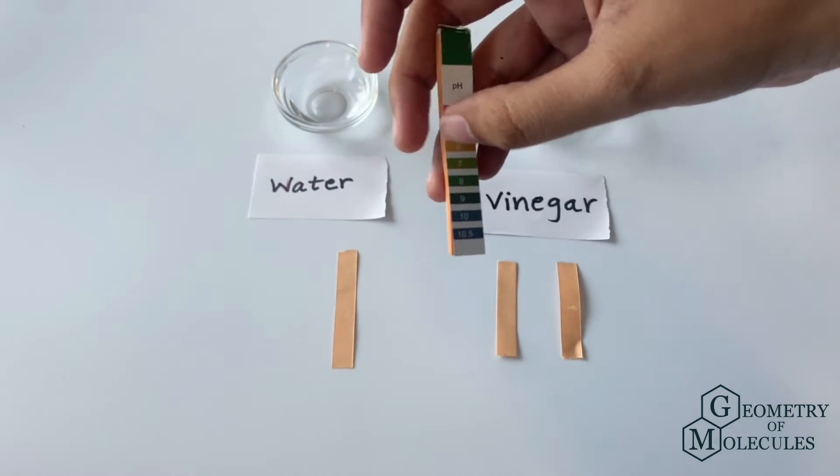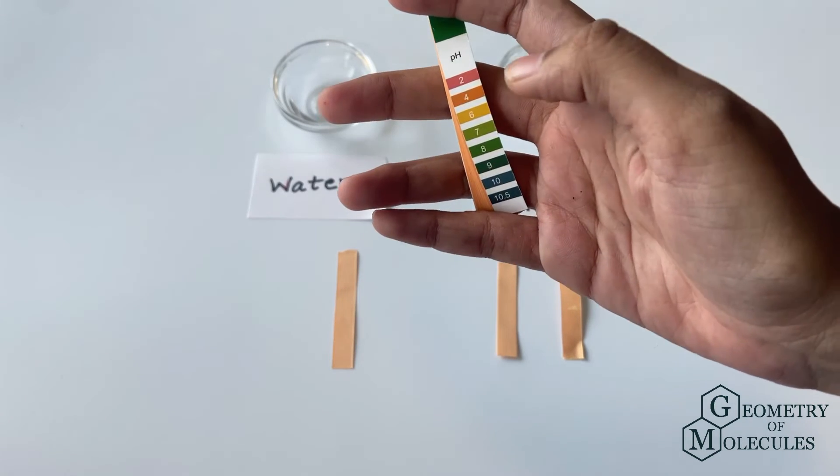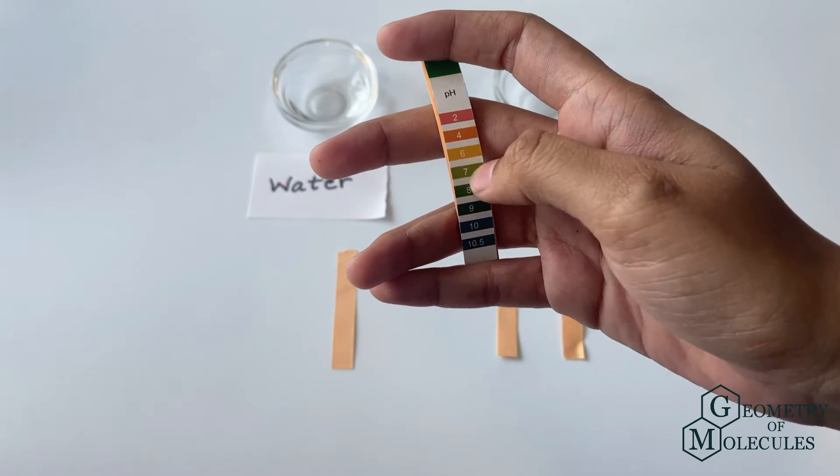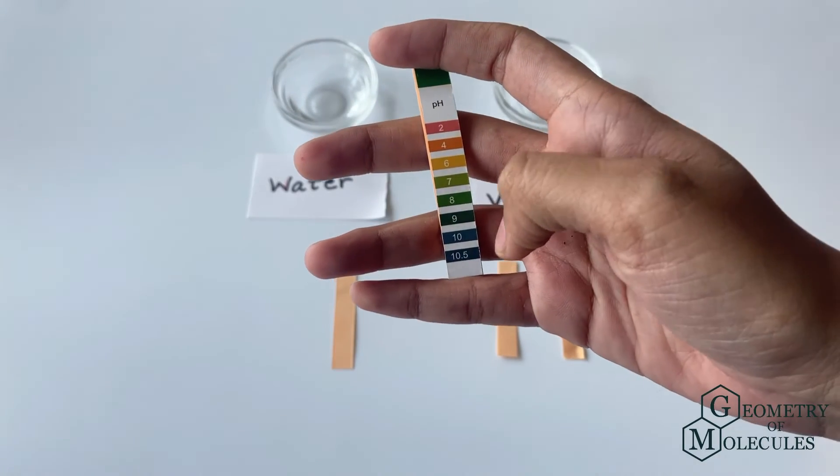Substances over 7 pH are considered basic, while the ones under 7 are acidic. If we get the value of 7, that means our substance is neutral.